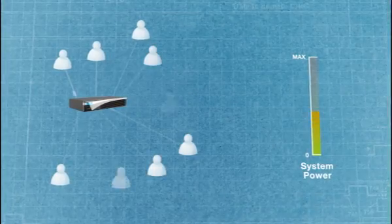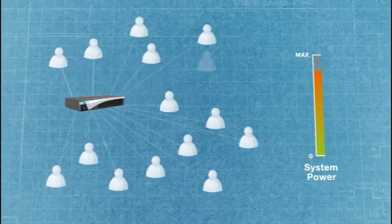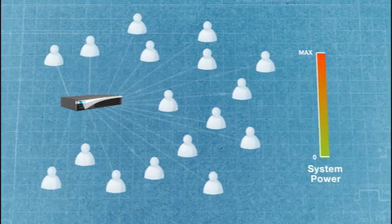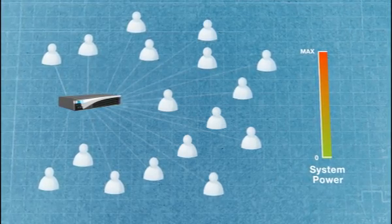A high-performing server is required to handle thousands, maybe even tens of thousands, of simultaneous connections with users all over the world. And each time a user connects to a server, whether it's with a web browser or whether it's with a cell phone, each time they connect, the server has to start a small process to service that user. And each one of these processes on the server requires a small amount of memory.